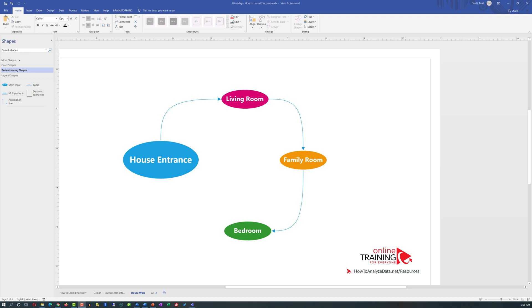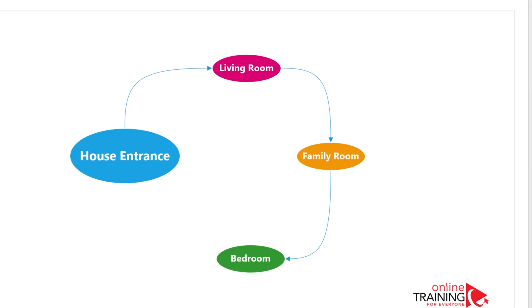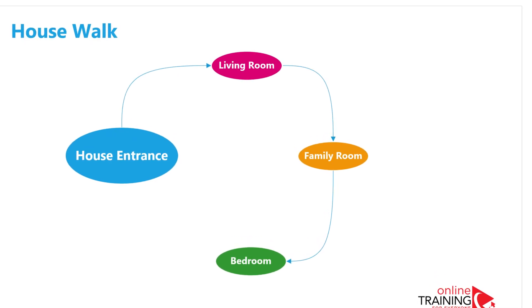The most popular way to memorize something and recall it on demand when you need it is to connect the information to something you already know. One of the most popular techniques these people use is called housewalk, and guess what? It looks precisely like a mind map diagram. This is how it works.